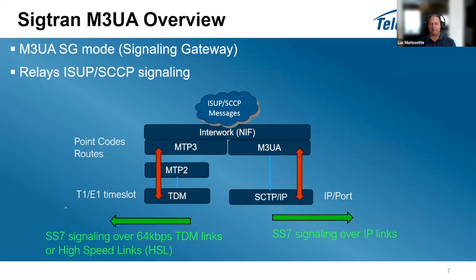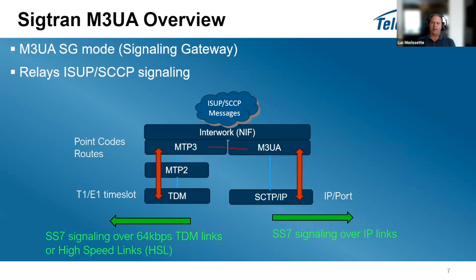Packets can also flow the other way: you receive packets on MTP3, and if MTP3 finds the point code is owned by the SCCP network, it forwards that out to the IP side. Although you see only layer 3 messages, what you actually transport are the higher-layer ISUP and SCCP messages over the network.